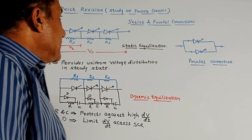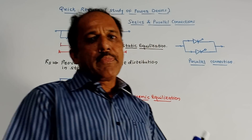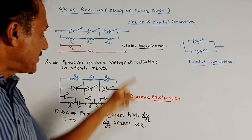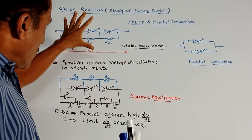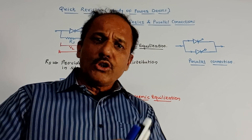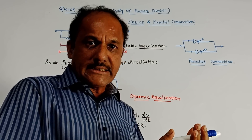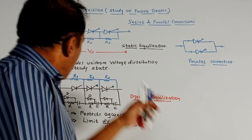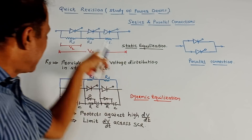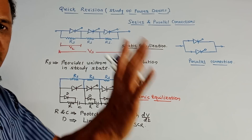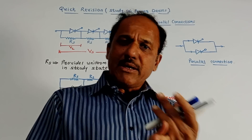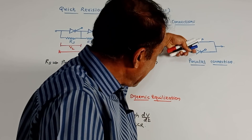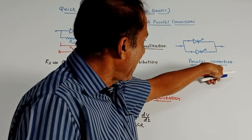Next are series and parallel connections of SCR. You may expect a question: what is the need of series and parallel connection, and explain static and dynamic equalization circuits. If more voltage is required — for example in electronic precipitators — a single SCR is not sufficient, so many SCRs are connected in series. When heavy current is required, such as in battery chargers, SCRs are connected in parallel.